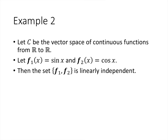Another vector space we talked about is the vector space of functions — we can add two functions and get another function, and multiply a function by a scalar and get another function. The set containing the sine function and the cosine function is linearly independent. If we set up the vector equation — using u's as variables since x already appears inside the functions — u₁ sin(x) + u₂ cos(x) = 0, here 'equal zero' means equal the zero function. We're asking whether some constant times sine plus another constant times cosine can cancel each other out.